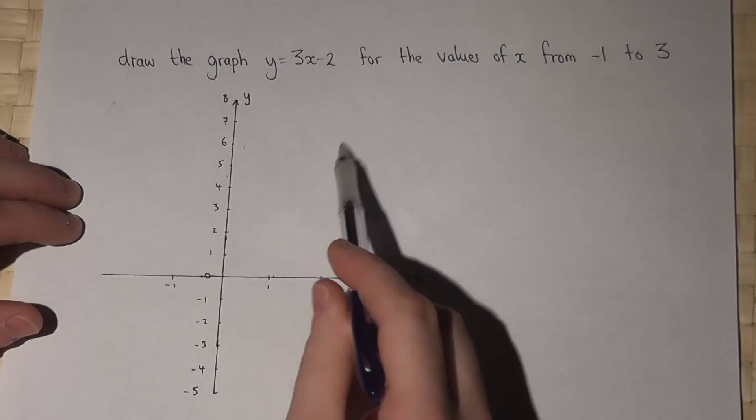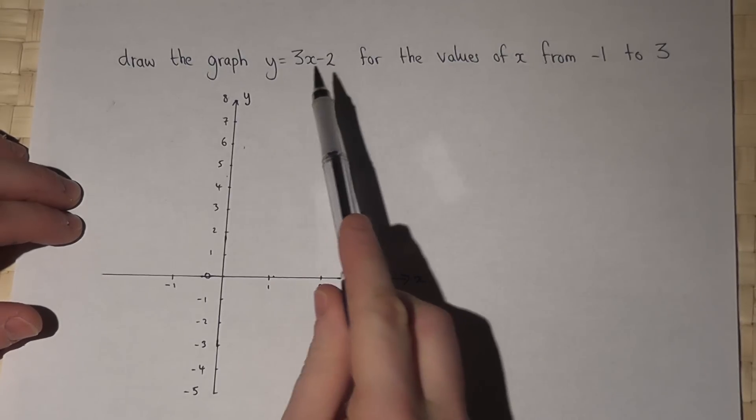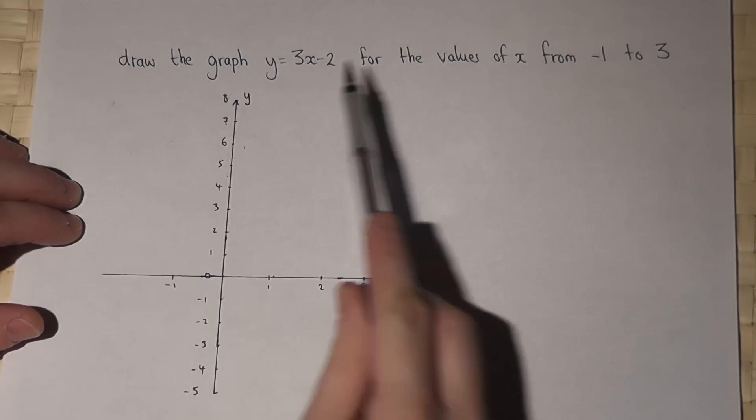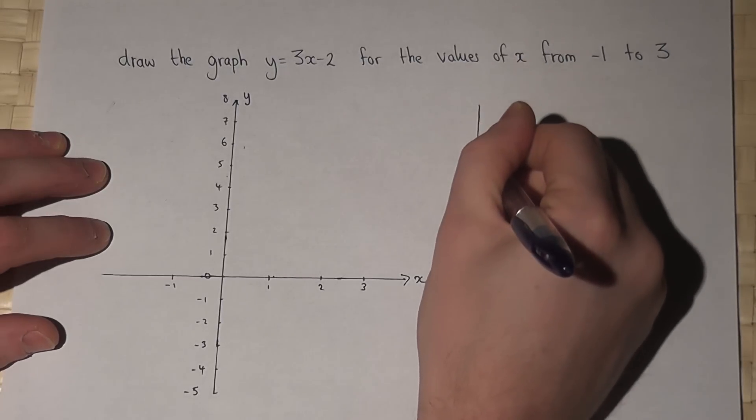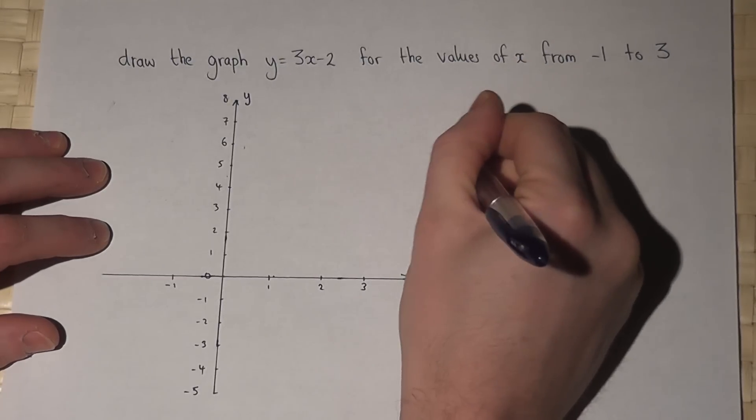In this question we're asked to draw a graph of y equals 3x take away 2 for certain values of x. Now the best way to do this is to construct a table of values.